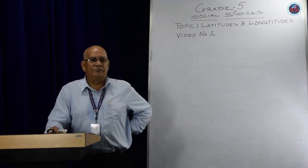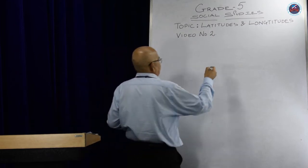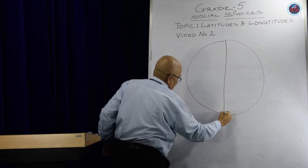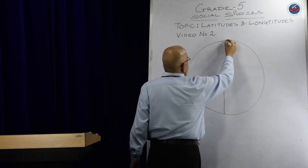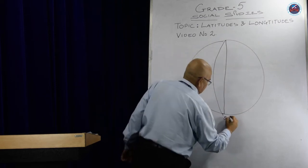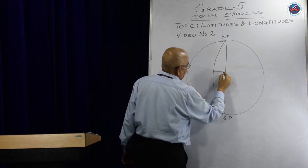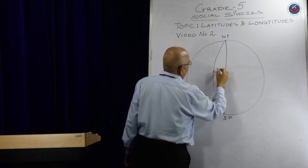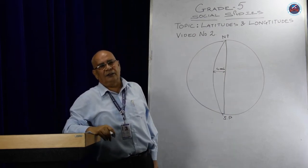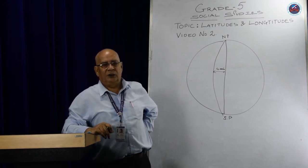Longitudes are important indicators of time. Let's say this is the prime meridian, and then we have another meridian joining at the south pole and the north pole. The distance between one to the other is four minutes. When we are calculating time, we have to calculate four minutes between each longitude.